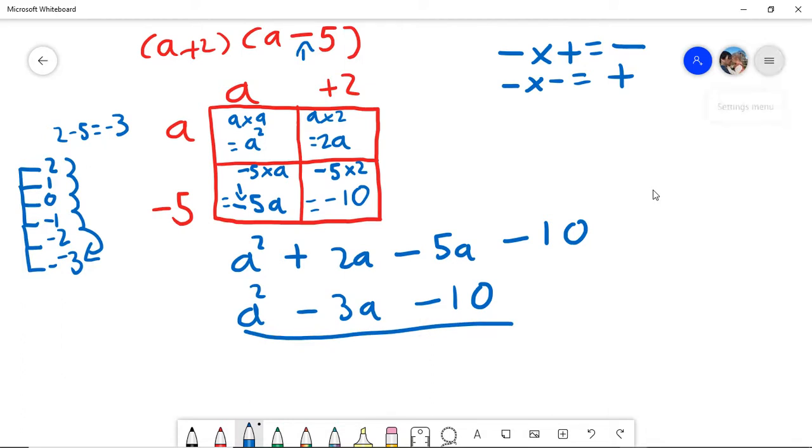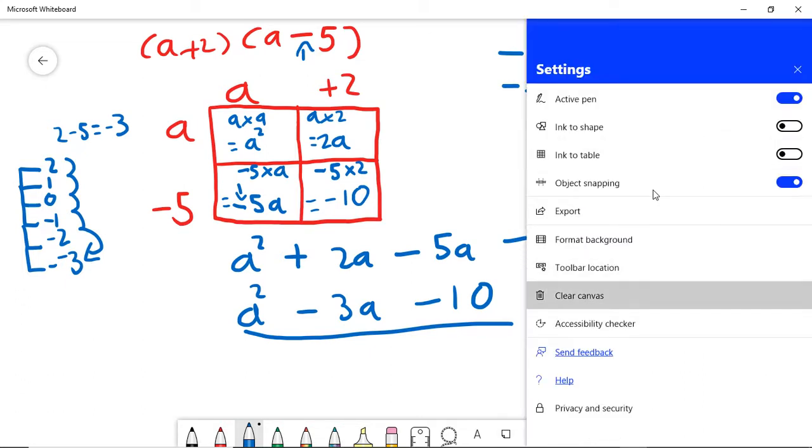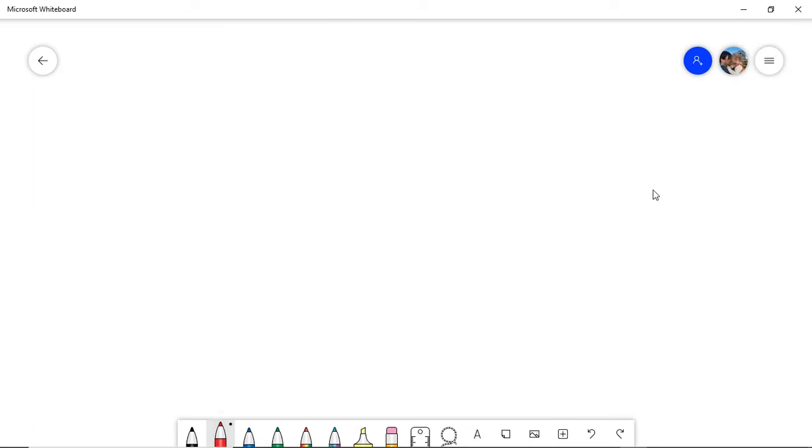Okay, so we'll have a look at a different one. Let's do 2a minus 3. And then we'll do minus 3a plus 2. So let's write this out. 2a minus 3, minus 3, plus 2, minus 3a plus 2.